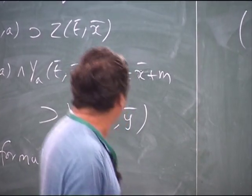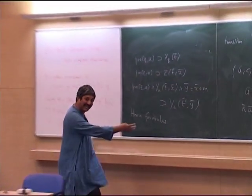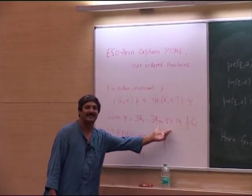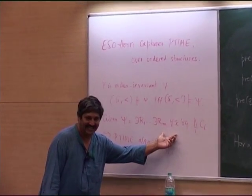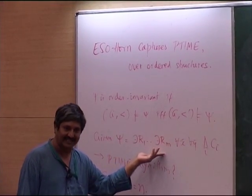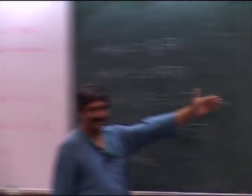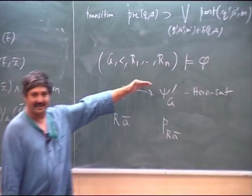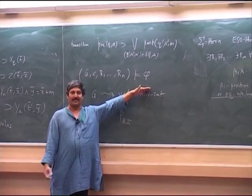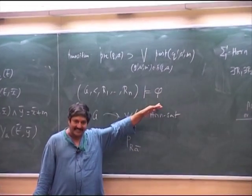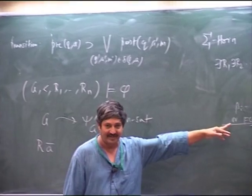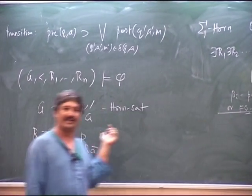We already know from the proof that a structure satisfies something of this kind if and only if in the particular structure — where you have R1 to Rn — it satisfies this first order sentence. Because it is in horn form, I can do the following.